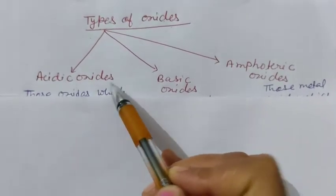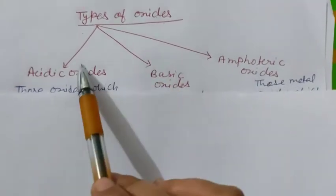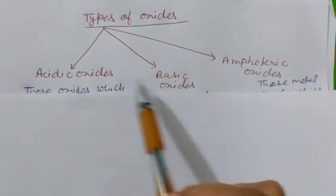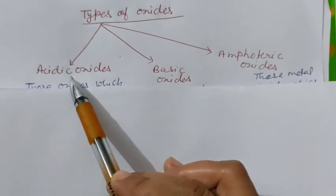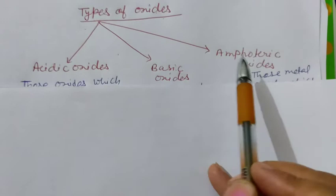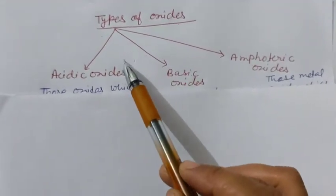Acidic oxides, basic oxides, and amphoteric oxides. One by one we will discuss all the types of oxides. First of all, I want to say that this lecture is important for